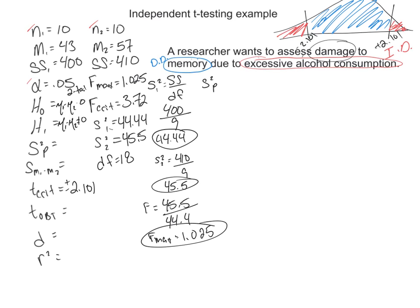Let's find pooled variance. Pooled variance is your sum of squares for the first group, plus the sum of squares for the second group, divided by your degrees of freedom for the first group, plus your degrees of freedom for the second group. Or 400 plus 410 divided by 9 plus 9. Or 810 divided by 18. So our pooled variance equals 45.